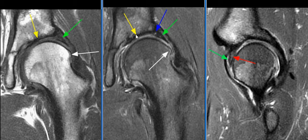The anterolateral acetabulum shows subchondral cystic change and sclerosis of the lateral acetabular rim, with underlying chondral softening.